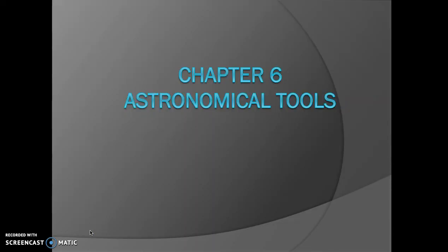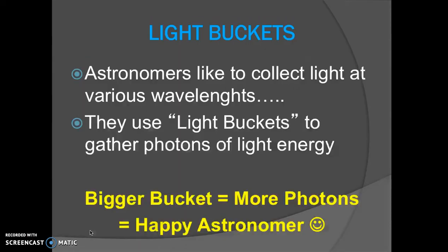Chapter six: astronomical tools, also known as telescopes. Think back to what light is. We've been talking about light. Astronomers collect light at all various wavelengths across the electromagnetic spectrum. See if you can remember why we like to collect light at various wavelengths.